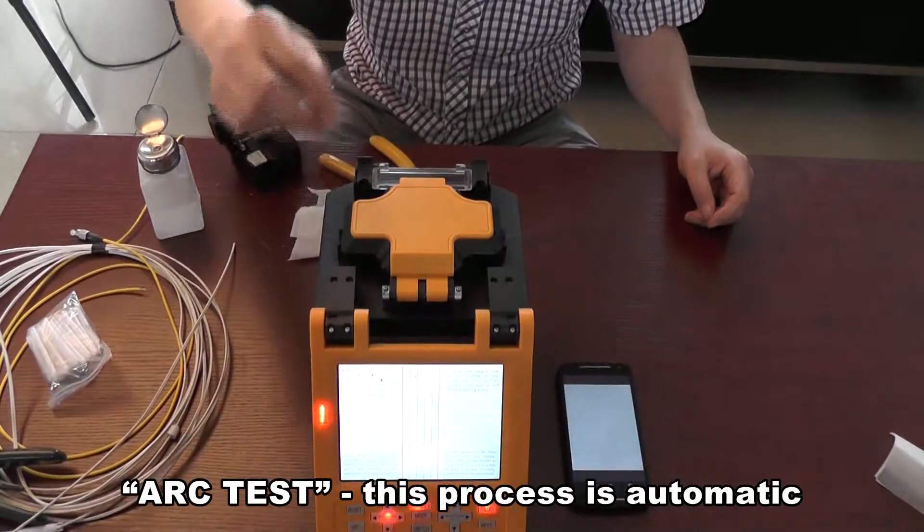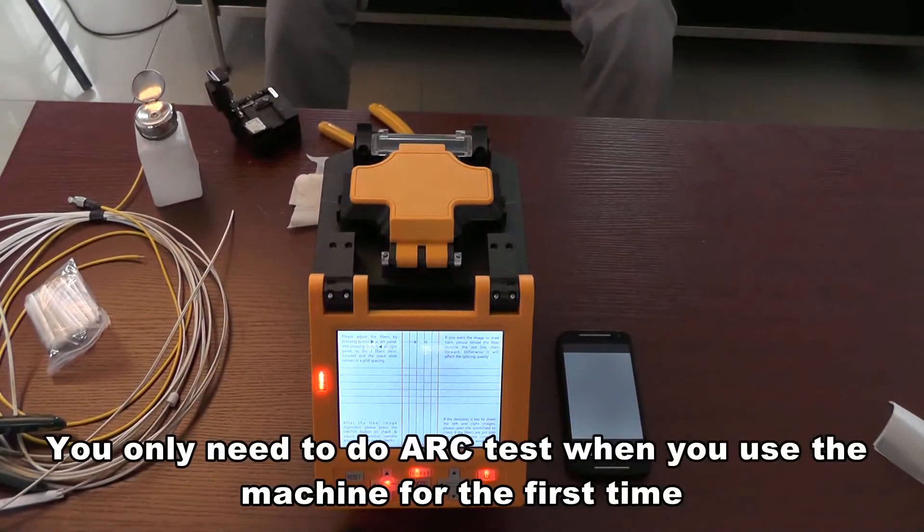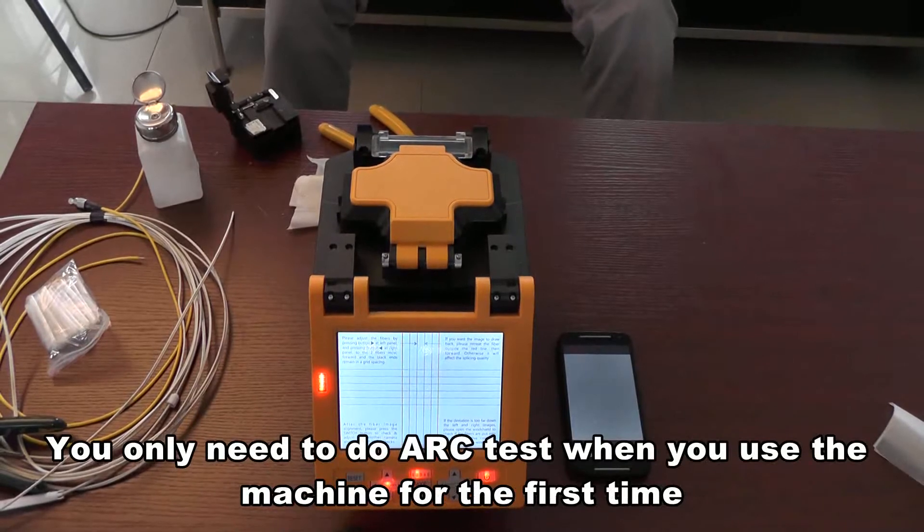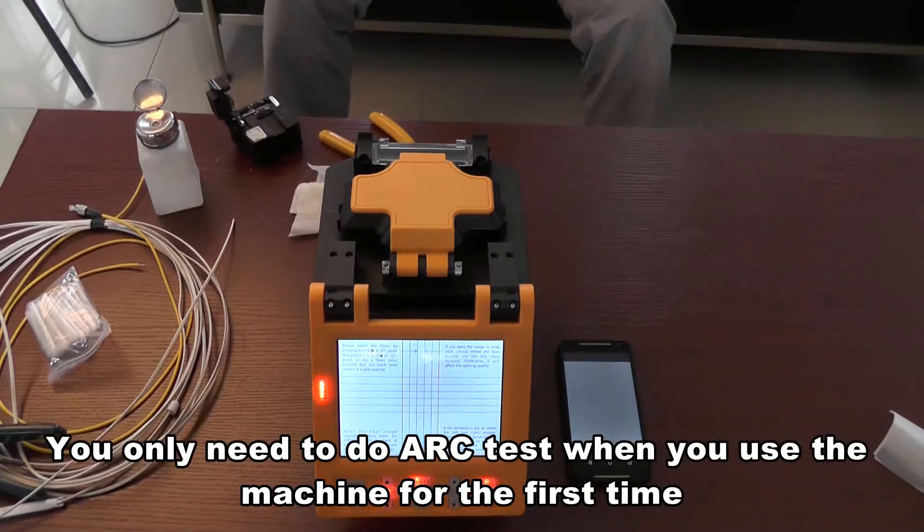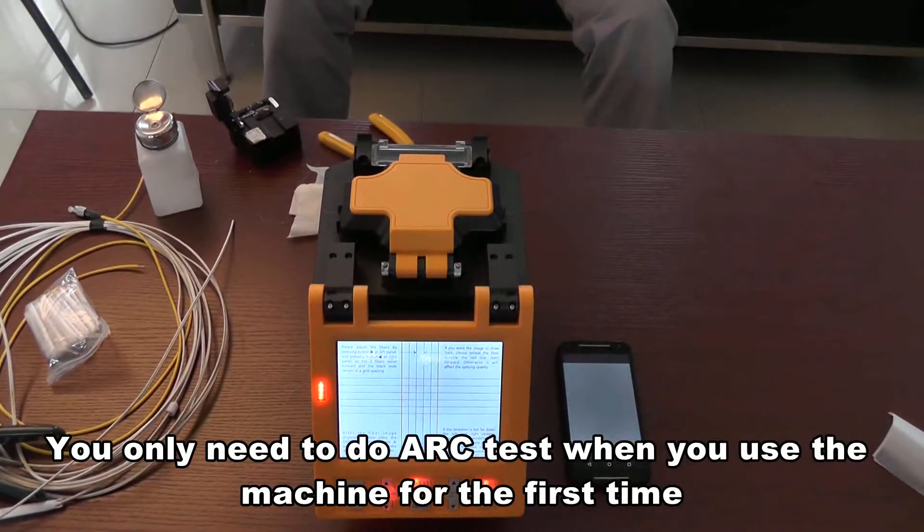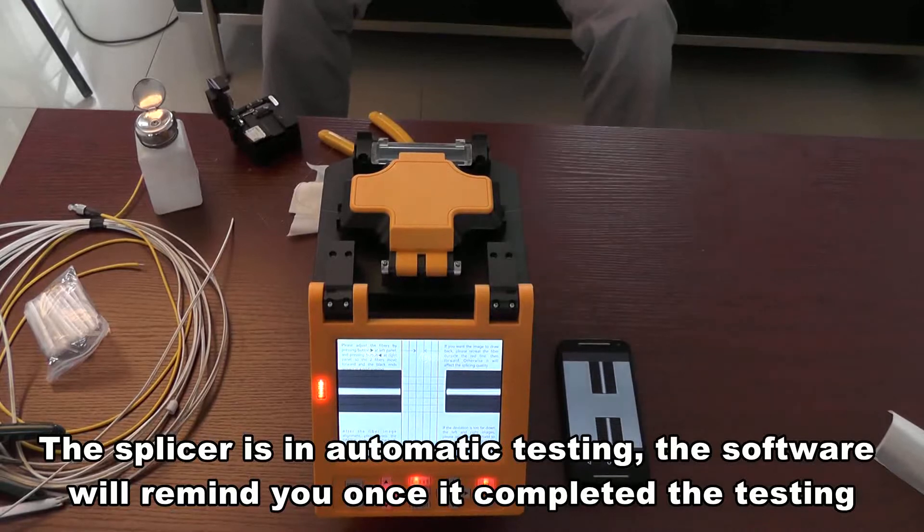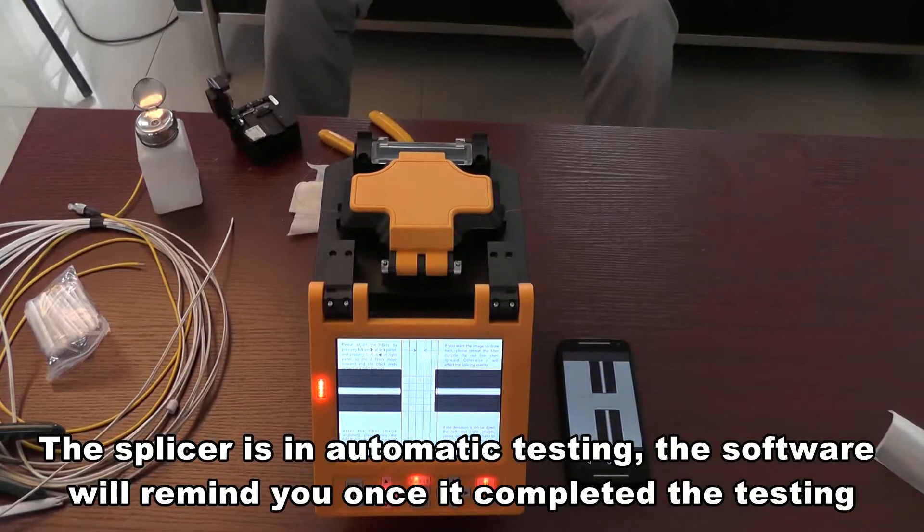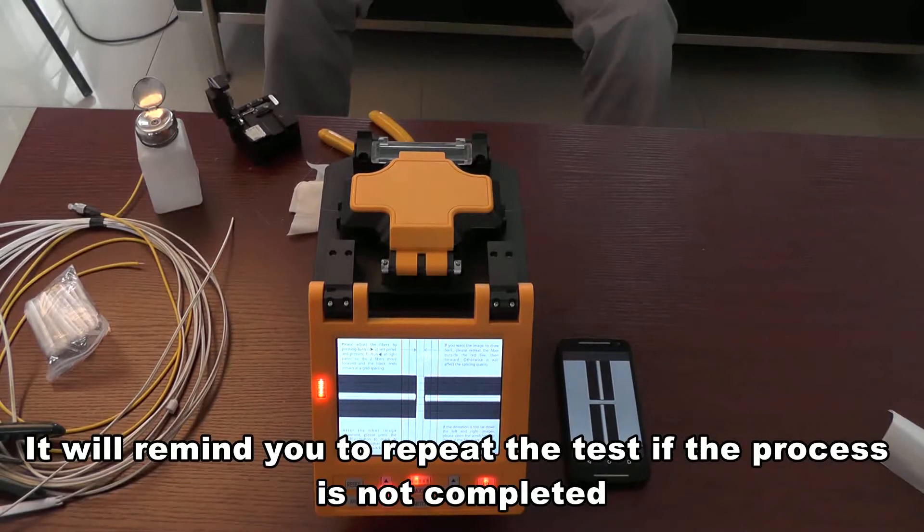Arc test. This process is automatic. You only need to do arc test when you use the machine for the first time. The splicer is in automatic testing. The software will remind you once it completed the testing. It will remind you to repeat the test if the process is not completed.